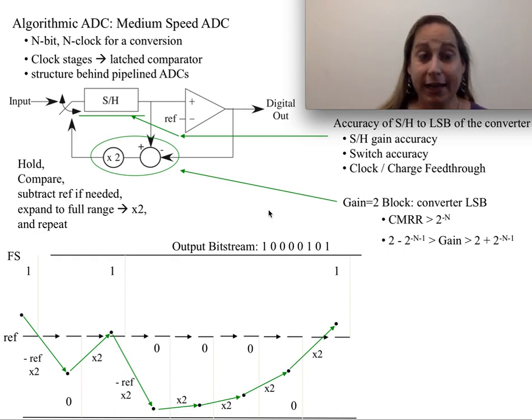I want to talk about an interesting medium-speed analog-to-digital converter structure called an algorithmic ADC. It's one of two classical architectures for medium-speed ADCs.